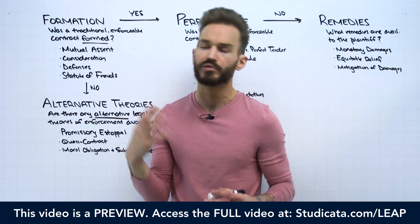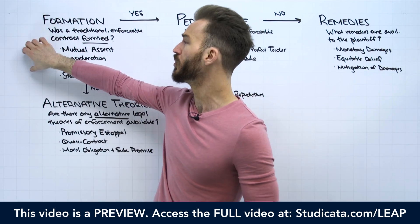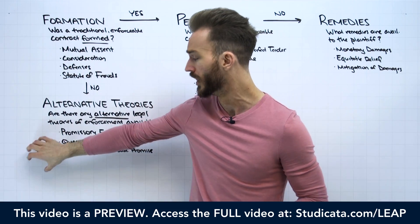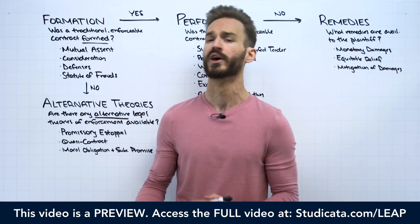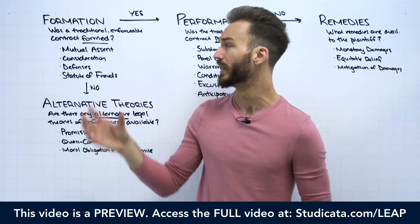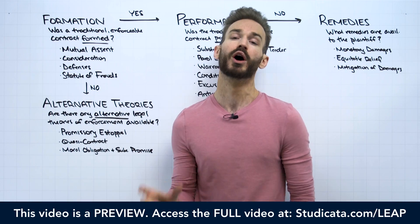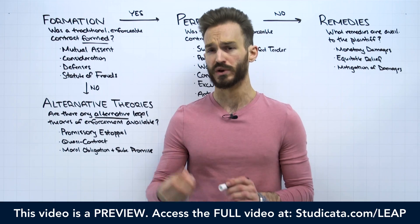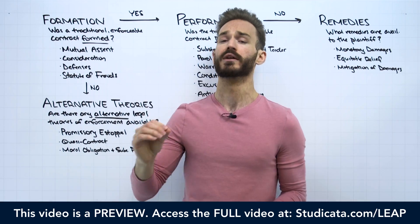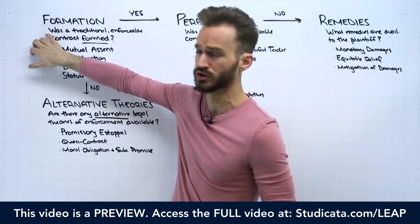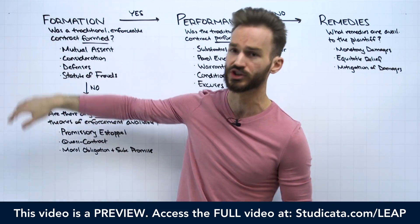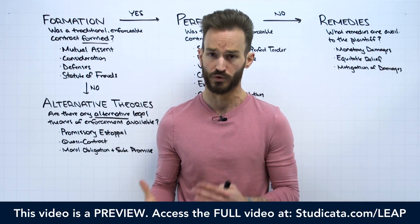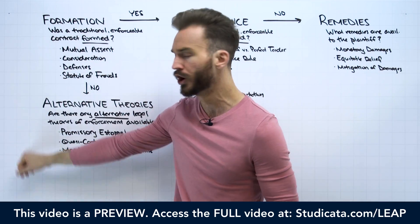A lot of times I hear professors and instructors and students using the word contract very interchangeably, and it's maybe not necessarily wrong to refer to these alternative theories as contracts, but I think it can be confusing. So in our heads we want to break this up. When we're trying to decide on a contracts fact pattern whether we can enforce an agreement between two people, our default standard is the traditional enforceable contract — mutual assent, consideration, defenses, statute of frauds. That's our default. But we don't want to forget about alternative theories.